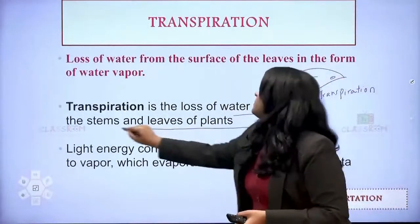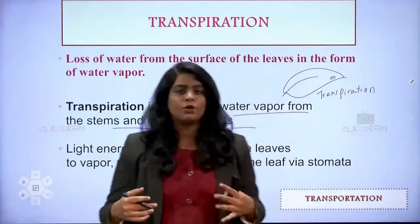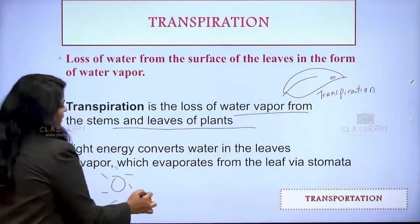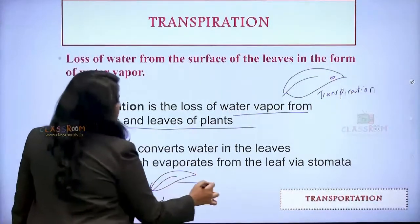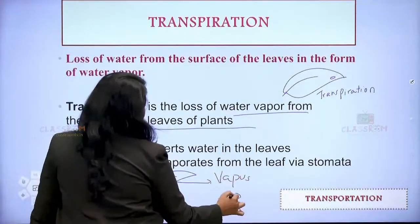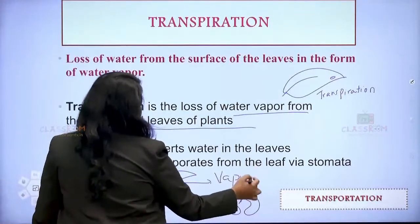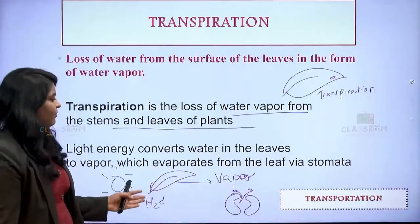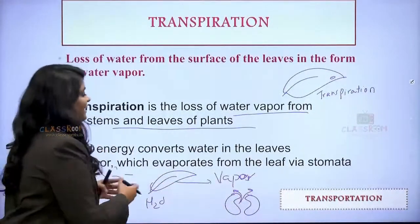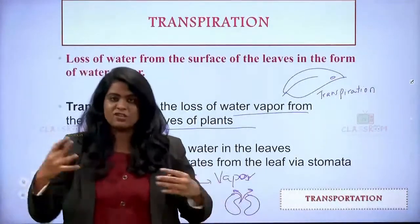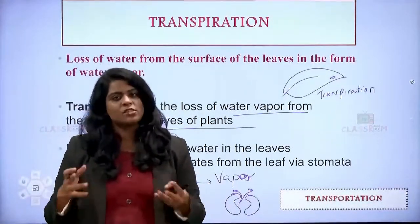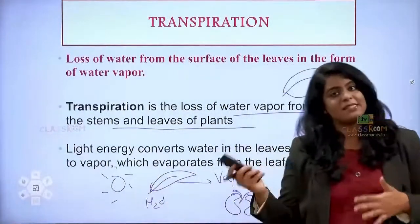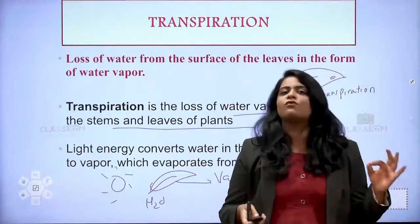Transpiration is the loss of water vapor from the stems and leaves of the plant. Light energy converts water in the leaves into vapor, which evaporates from the leaf through bean-shaped structures called stomata. These pores open and the water evaporates. So how is vapor formed from the leaf? The sun provides light energy, it falls on the leaf, and the water present in the leaf evaporates. Transportation of food and water is done by xylem and phloem, and transpiration occurs in the form of water vapor through leaves.